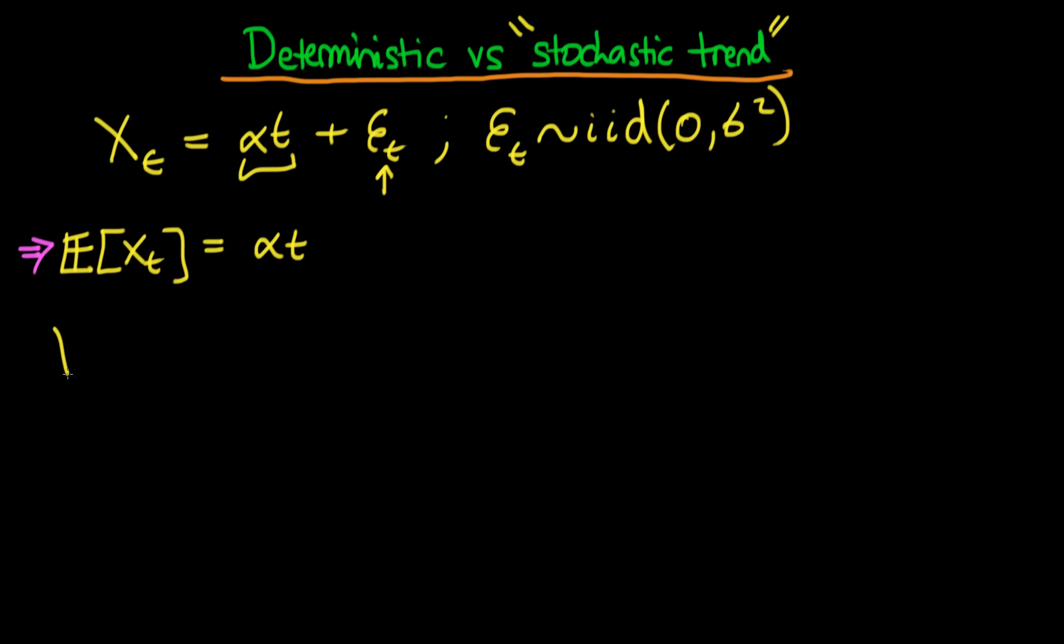Okay, what about its variance? The variance of Xt, well this first term is not going to contribute anything to the variance because it's just deterministic, it doesn't vary. The only term which is going to contribute any sort of variance is going to be this error term here. So we're going to have Sigma squared coming from the second term. But notice unlike the expectation, the variance is actually constant throughout time. So we can kind of think about this process as being stationary if we were to take into account a linear time trend.